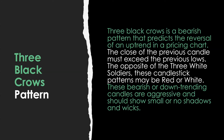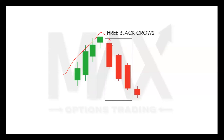The three black crows, conversely, is the bearish pattern that predicts the reversal of an uptrend. The close of the previous candle must exceed the previous lows — the opposite of the three white soldiers. These candlestick patterns may be red or white based on the charting software. The bearish candles are aggressive and should show small or no shadows or wicks. We had a beautiful uptrend and then three very bearish, strong candles with huge bodies and no wicks, followed by continuation to the downside. This would be your entry when you recognize the reversal and three strong candles showing that selling pressure.